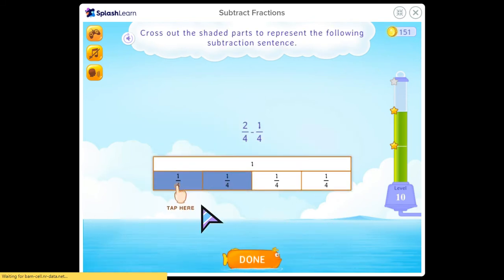Cross out the shaded part to represent the following subtraction. So now you need to model it. So 2 fourths minus 1 fourth. That means we would have to X out 1 fourth because we're taking away 1 fourth. And then our answer is 1 fourth, everywhere.